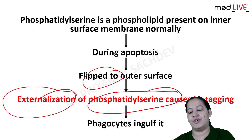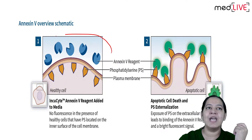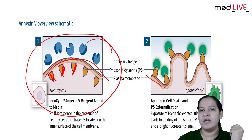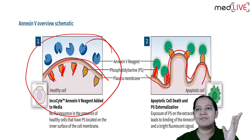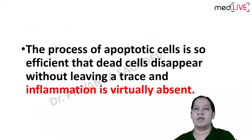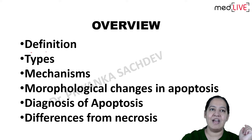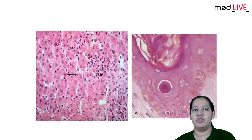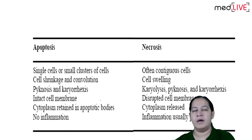The Robbins diagram shows: in a normal cell membrane, phosphatidylserine is present on the inner side. During apoptosis and formation of apoptotic bodies, the flip-flop brings phosphatidylserine to the outer side. Virtually, inflammation is absent because there is no leakage. I am done with the definition, types, and mechanism of apoptosis.